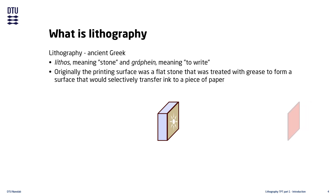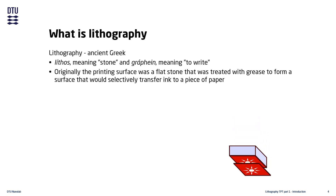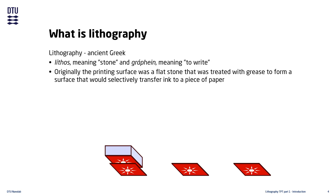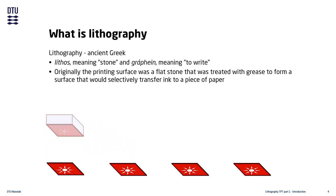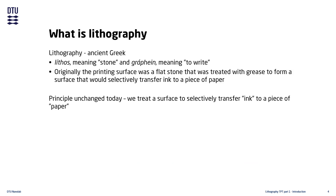The stone could now be used to transfer the pattern to a piece of paper, as the ink would only adhere lightly to the surface of the grease film pattern but would adhere strongly to the paper. This process could be repeated many times, each time producing an exact replica of the pattern. The principle remains mostly unchanged today, except all the components have been replaced with more modern versions.